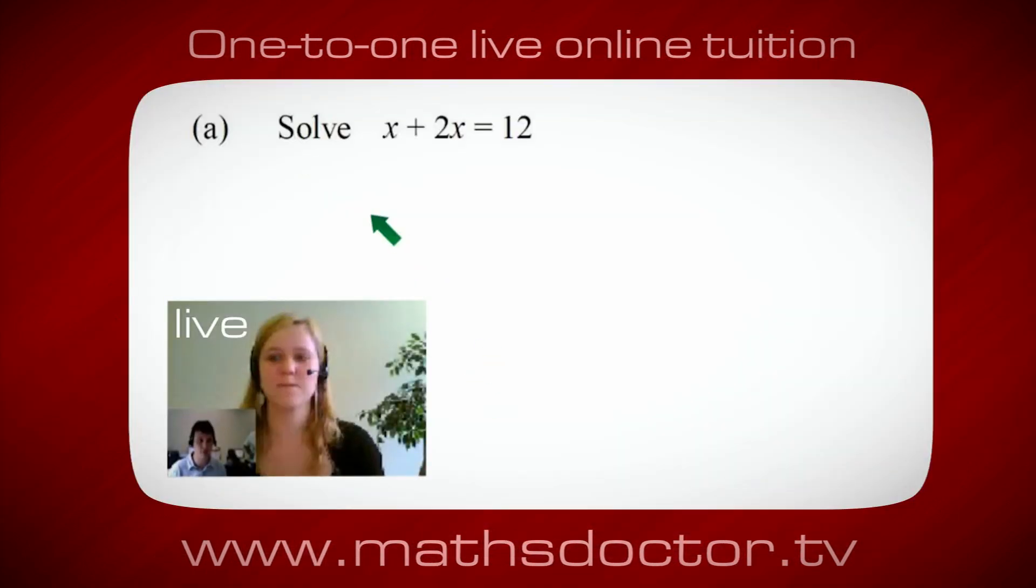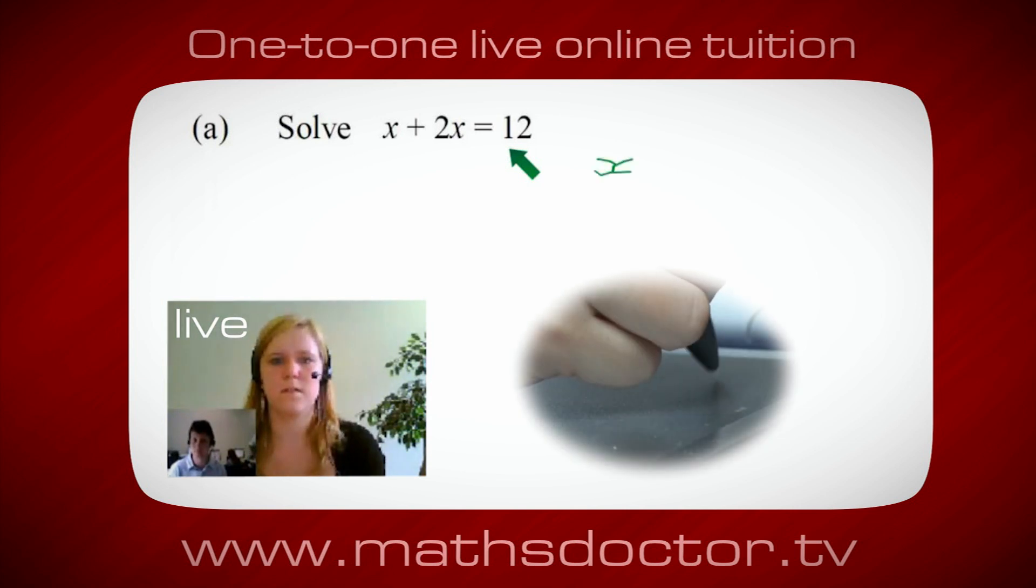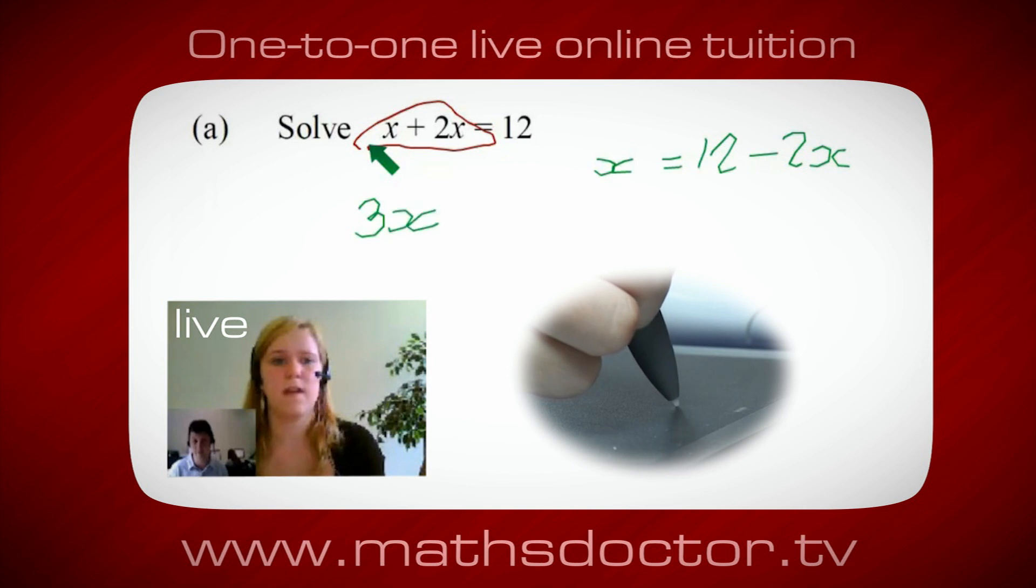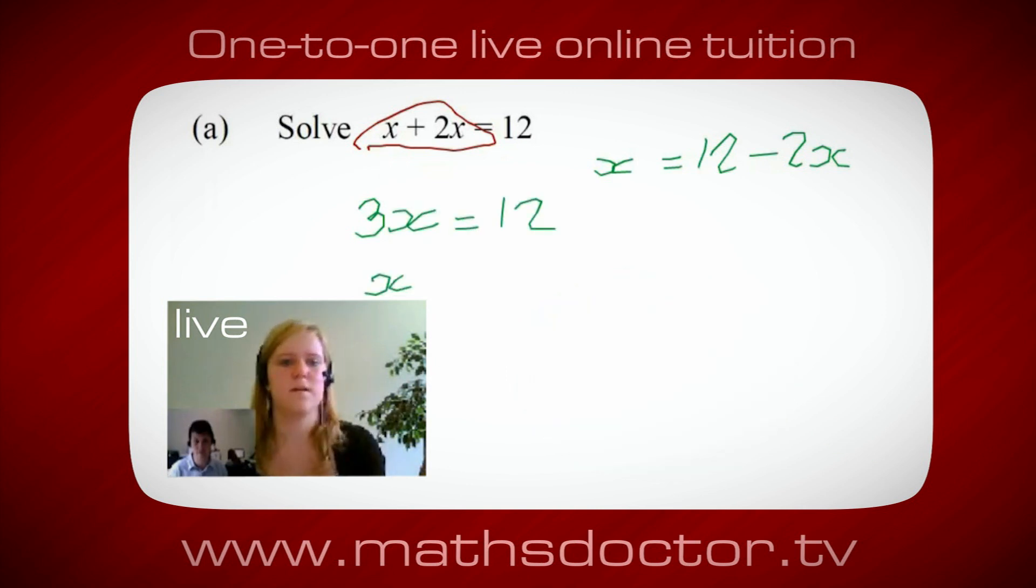Okay Marie, so let's have a look at this one. Solve x plus 2x equals 12. So what do you think you'd do first? Okay, well I want x on its own. So I would put x equals 12 minus 2x. Okay, so a lot of the time we want to get x by itself, but what we want to do first is get all of these x's together. So can you see anything we can do with this? Get all these together in one place. Oh okay, it's 3x isn't it? Yeah, absolutely. So 3x equals 12. Oh, and so x equals 4. Brilliant, spot on, well done.